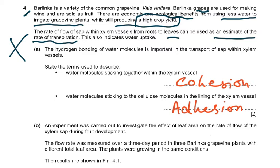The hydrogen bonding of water molecules is important in the transport of sap within xylem. State the term used to describe water molecules sticking together within the xylem vessel — cohesion. Water molecules sticking to the cellulose — adhesion.